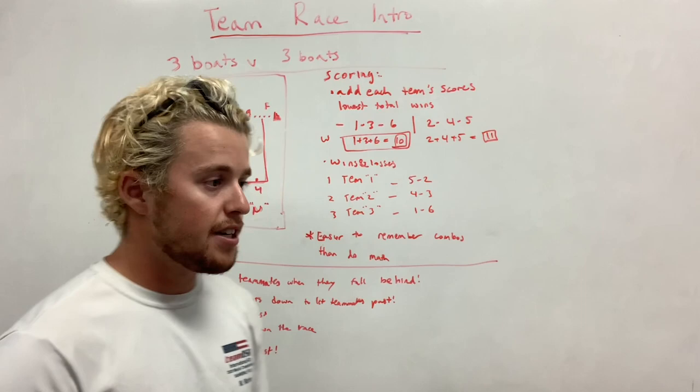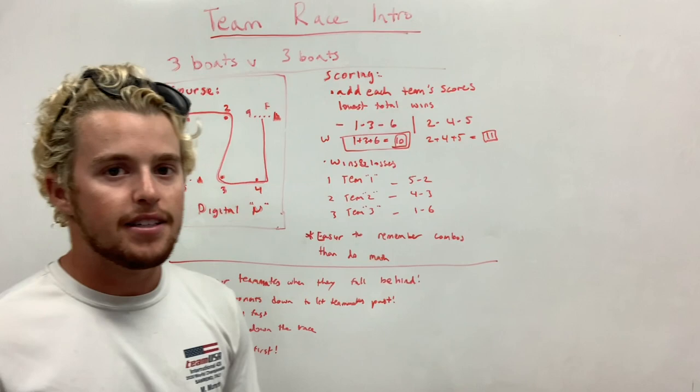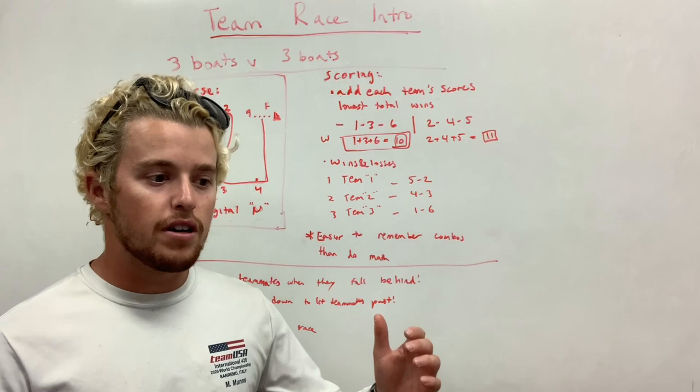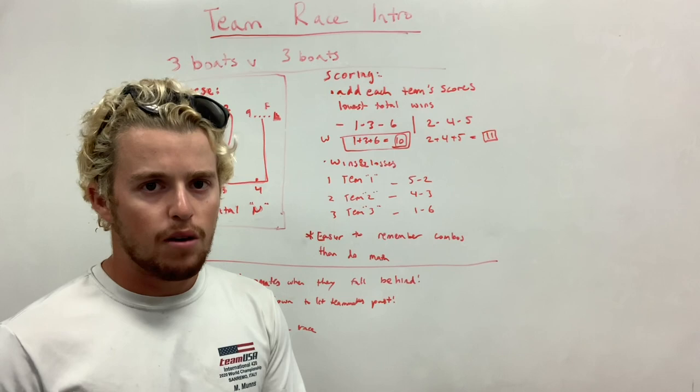One good tip is helping your teammates when they fall behind. If you're in first and your teammates are in fifth and sixth, that is greater than 10 points. We always say 10 points or less. So if you're in first and your teammates are last, you're going to lose the race. You have to turn around and try and help them.